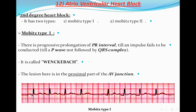This example shows a first normal PR interval within the big square, then a little bit more prolongation, then more and more prolongation, then a P wave buried in the T wave without a QRS complex. Then it starts over again with a normal PR interval, then progressive prolongation, and so on. This is progressive prolongation of the PR interval — it is not fixed like in first degree heart block. This is Mobitz type 1 of the second degree heart block.